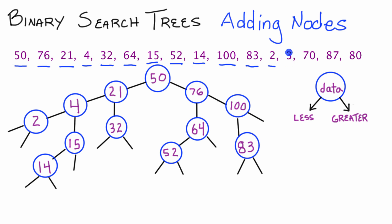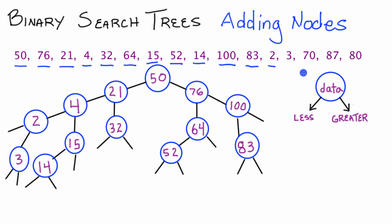Next we add node 3, starting at our root. 3 is less than 50, we take the left pointer. 3 is less than 21, take the left pointer again. 3 is less than 4, we take the left pointer. Finally, 3 is greater than 2, so we place node 3 there, and mark 3 off our list.